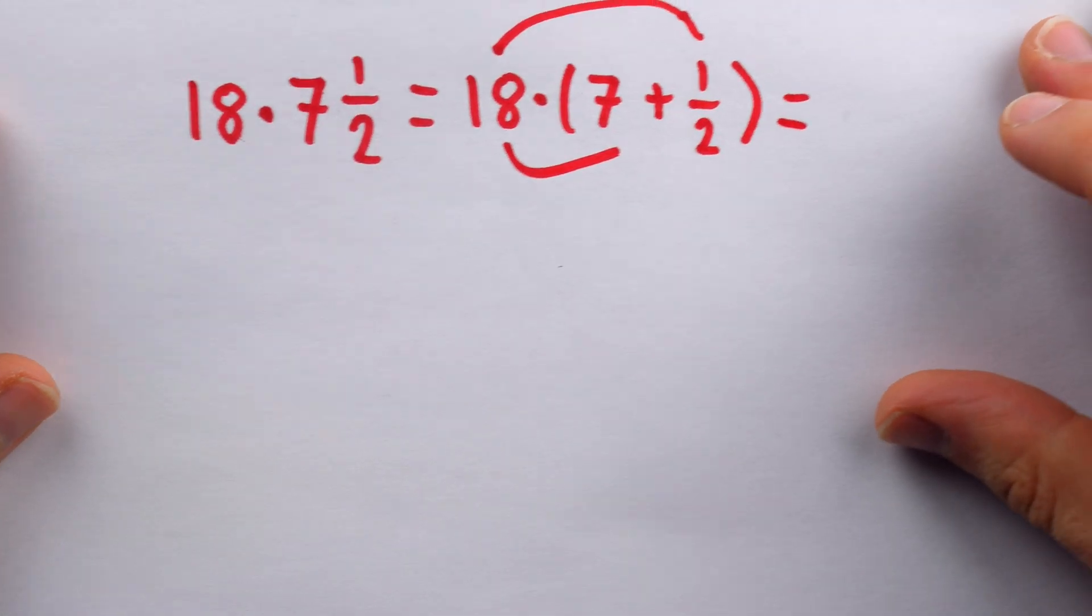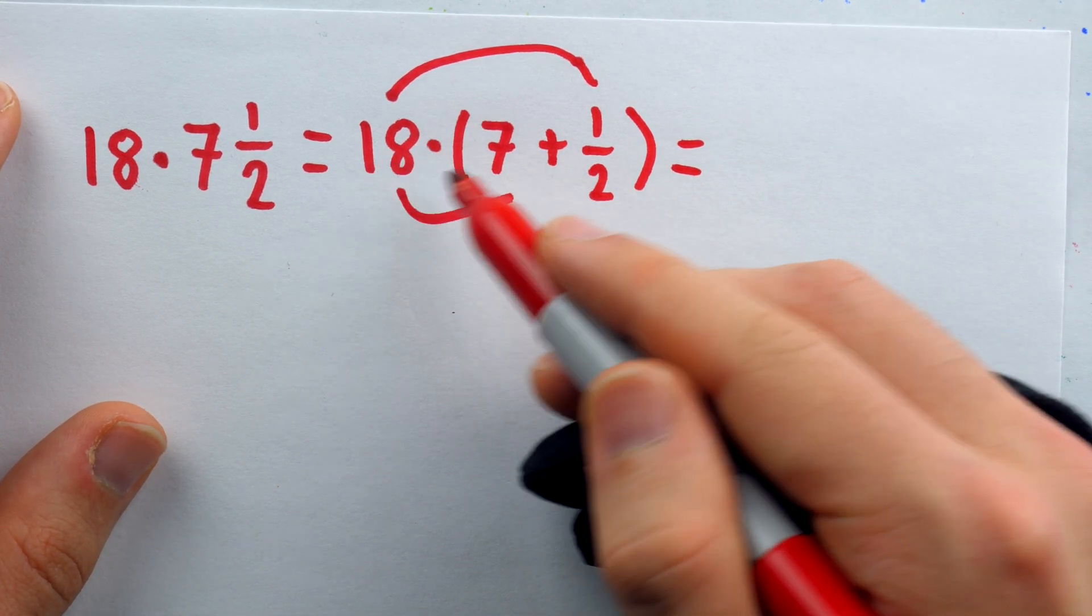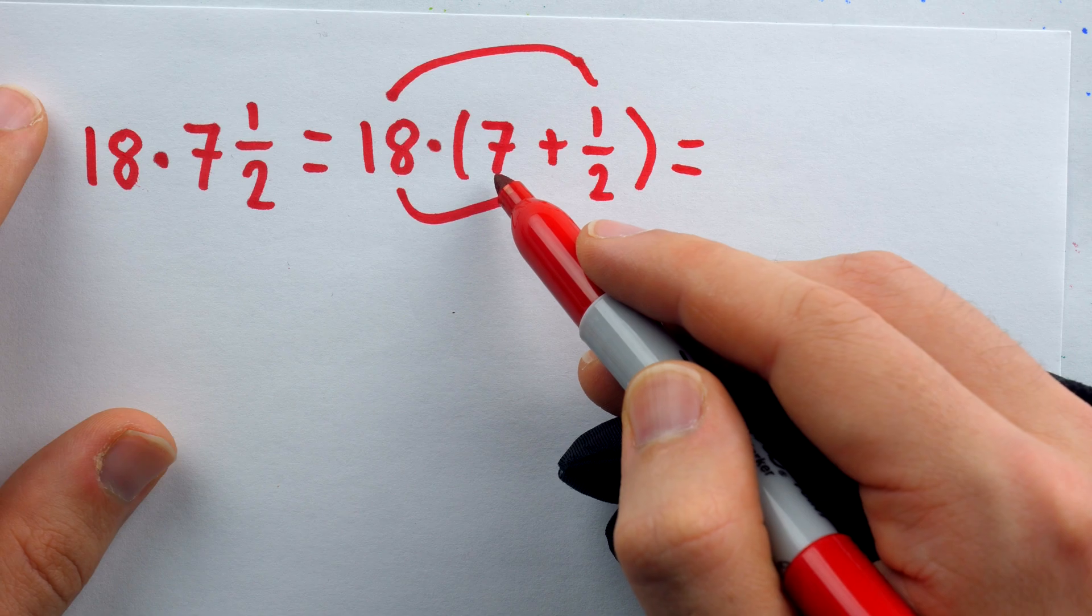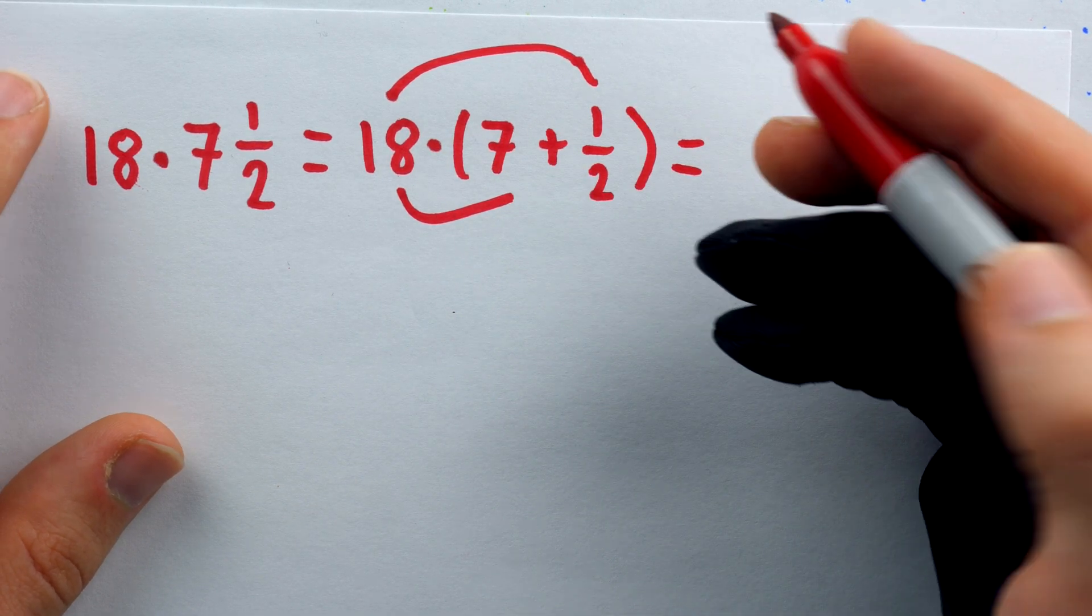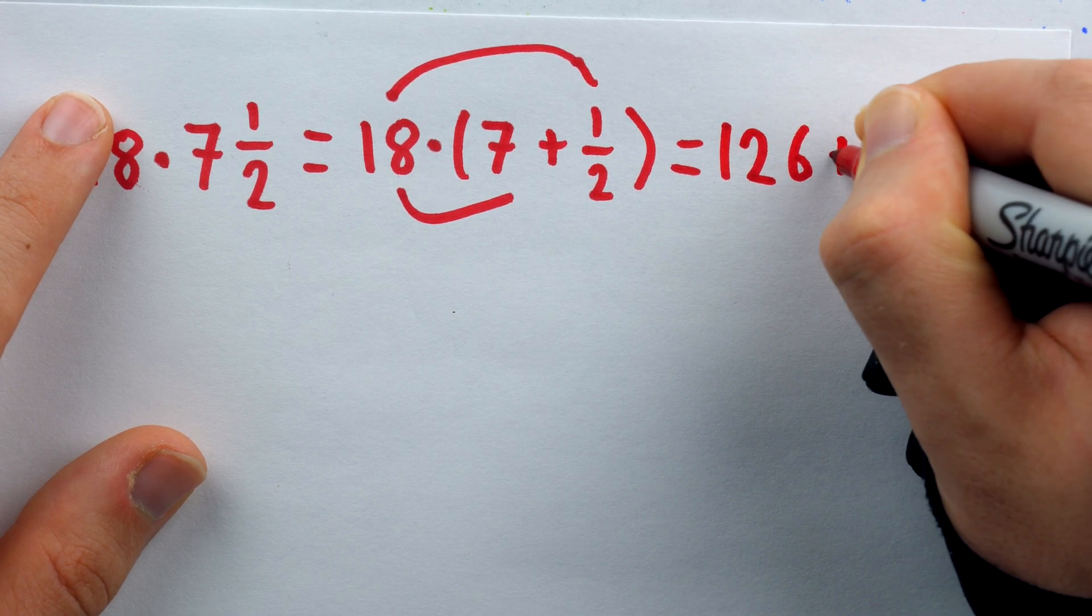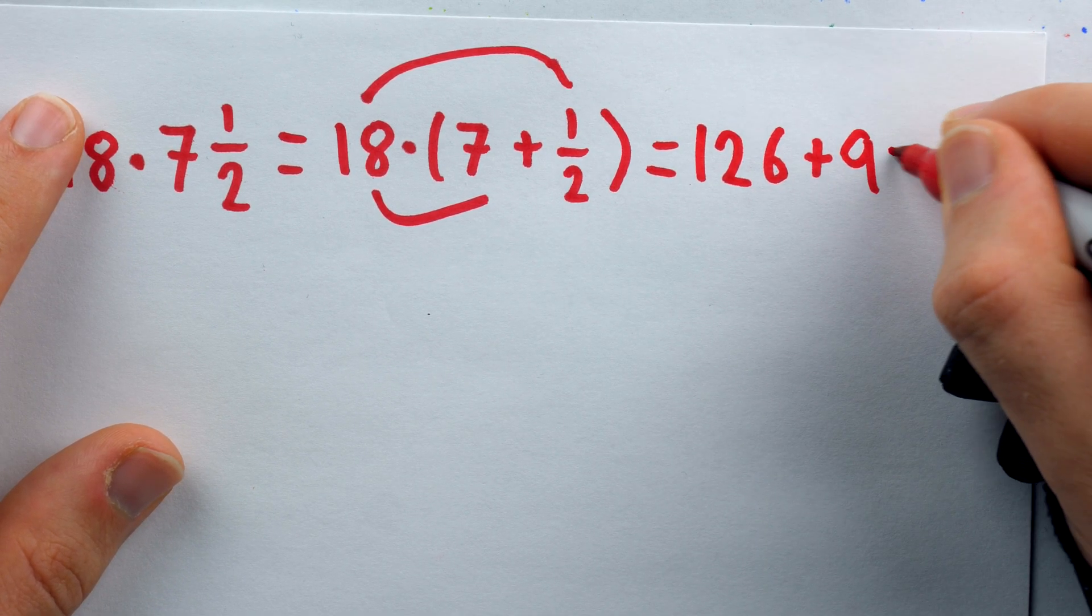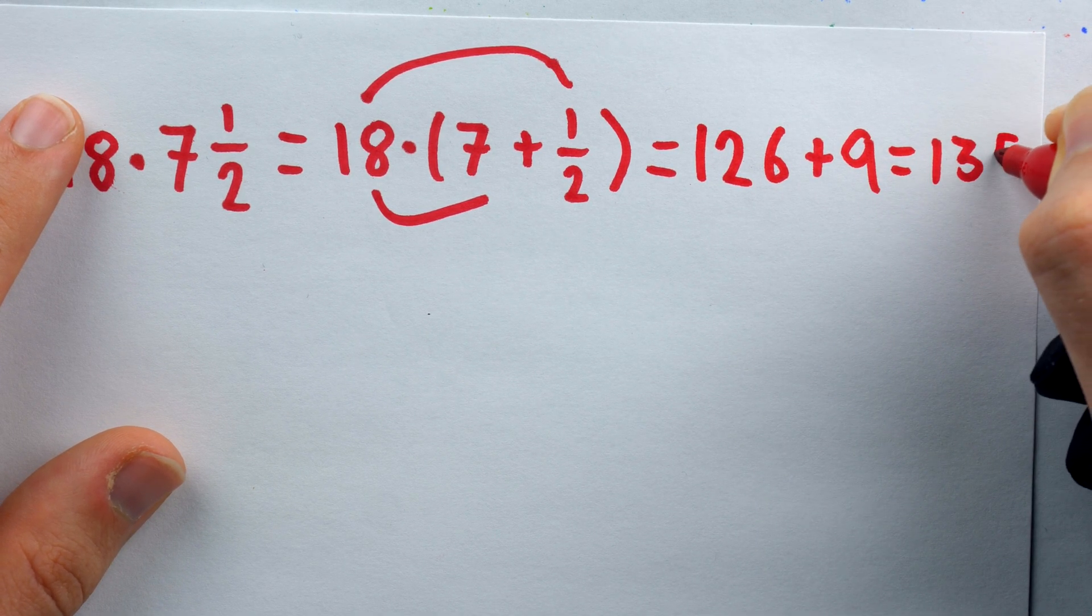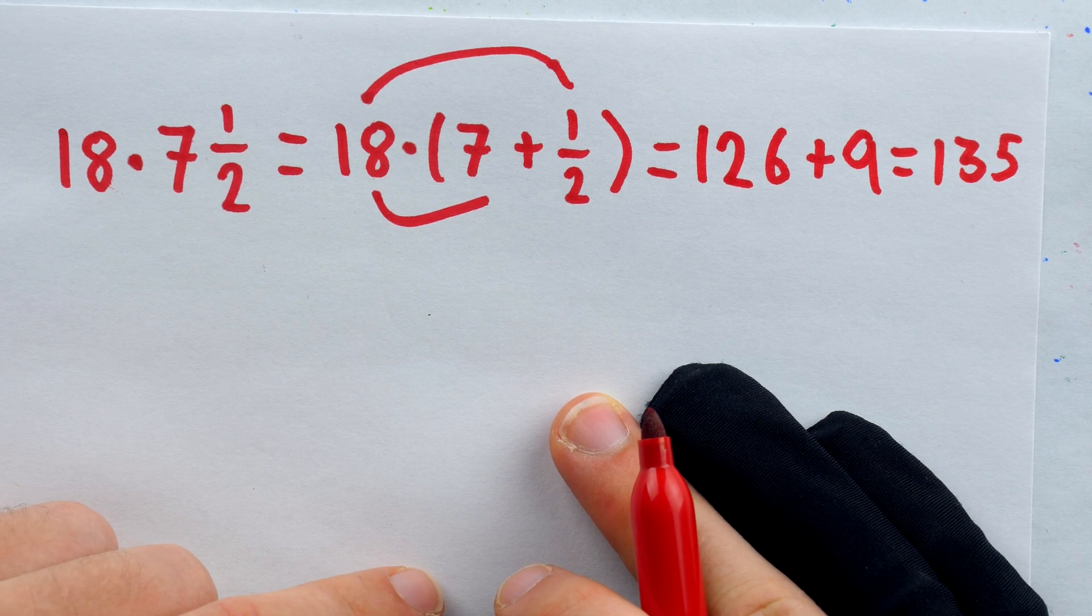That multiplication isn't all too difficult. 18 times 7, we can think about that as 10 times 7, which is 70, plus 8 times 7. 8 times 7 is 56, and so when we add that to 70, we get 126. And then we just have to do 18 times 1 half, and so that ends up being plus 9. Final answer is 135, and another multiplication by 7 and a half has successfully been conquered.